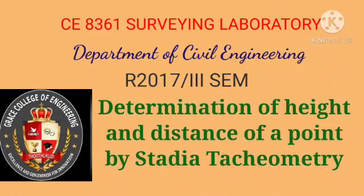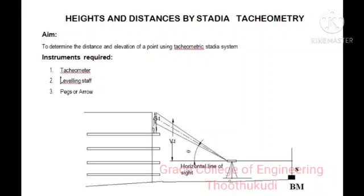Determination of height and distance by stadia tachymetry. Aim: to determine the distance and elevation of a point using tachymetric stadia system. The instruments required are tachymeter, leveling staff, pegs, and arrow. In this experiment we determine the height of the building and the distance between the instrument station and the building by using stadia tachymetry.